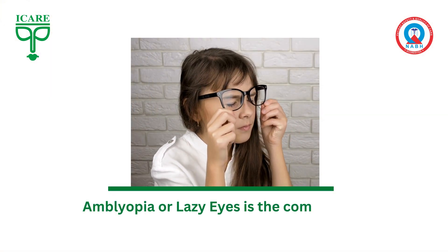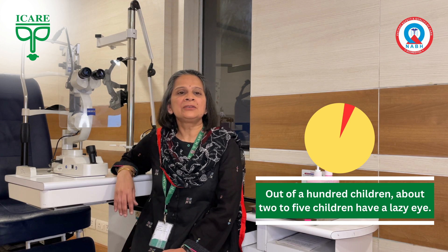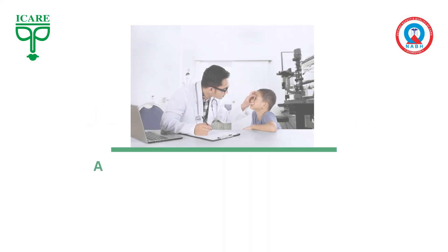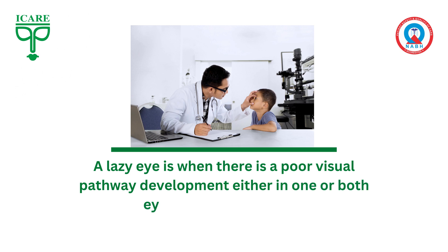Amblyopia, or lazy eye, is the commonest cause of poor vision in children. In fact, out of 100 children that we see in our OPD practice, about 2 to 5 children would have a lazy eye. A lazy eye is when there is poor development of the visual pathway, either in one or both eyes, because of various reasons, which leads to poor vision in a lazy eye.